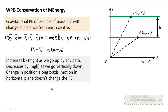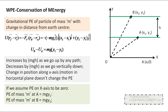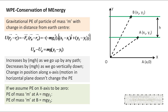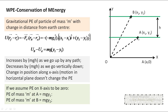Motion along the x-axis or in the horizontal plane does not change gravitational potential energy, because no work is done by gravity when displacement is perpendicular to the gravitational force. To calculate absolute potential energy, we choose a reference level where potential energy is zero. If the x-axis is chosen as reference, the potential energy at height y1 is mgy1 and at height y2 is mgy2. The reference level is the horizontal surface at which potential energy is assumed to be zero.